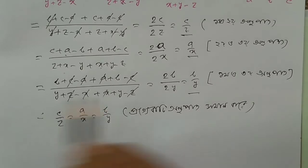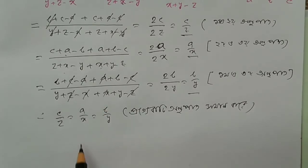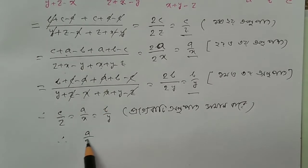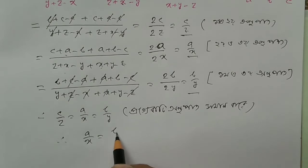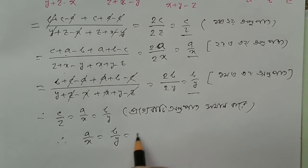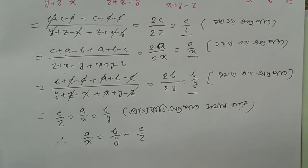So we have A by X equals B by Y equals C by Z.